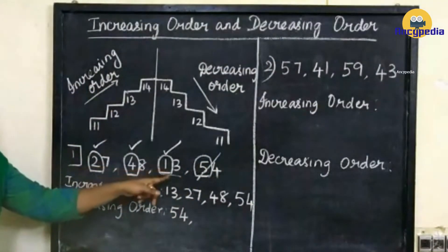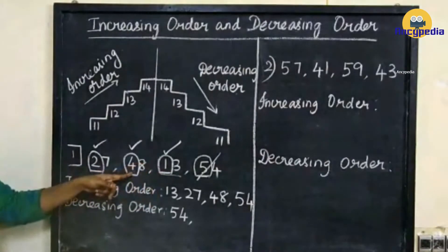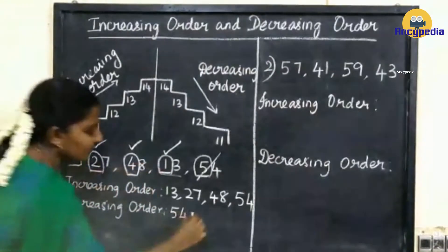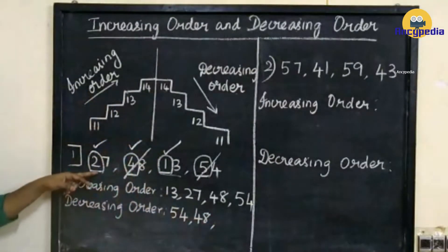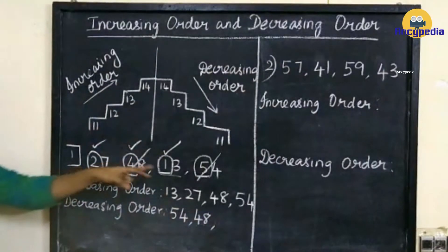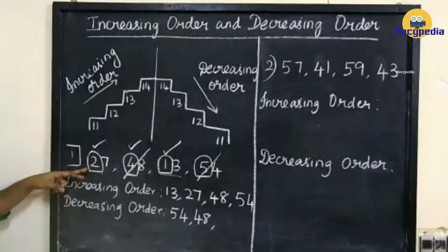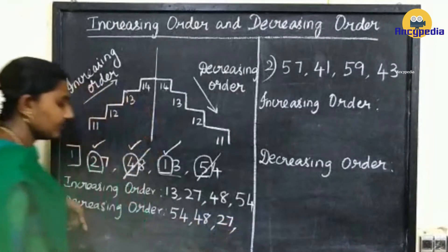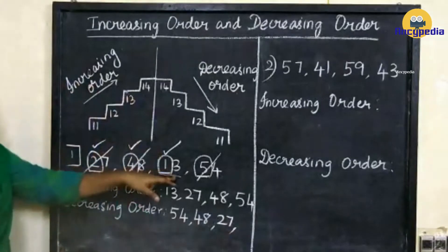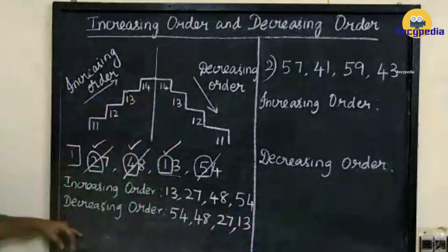Next, compare 2, 4 and 1. Which one is larger? 4 is larger. So we have to write 48. Next, here we have 2 and here we have 1. Which one is larger? 2 is larger. So we have to write 27. Next, we have 13.